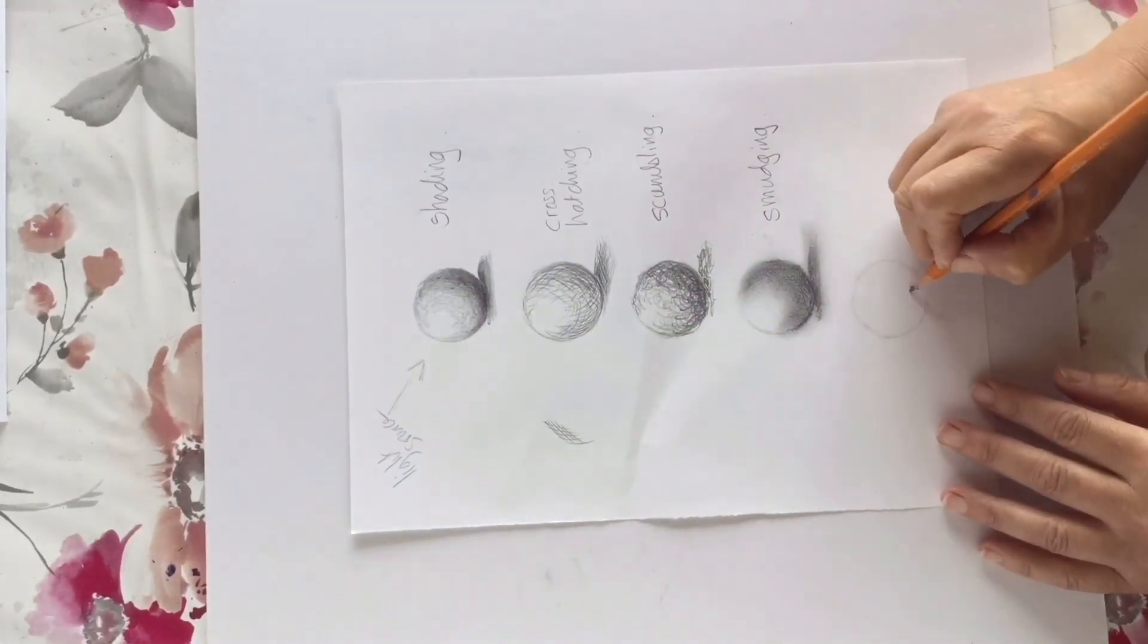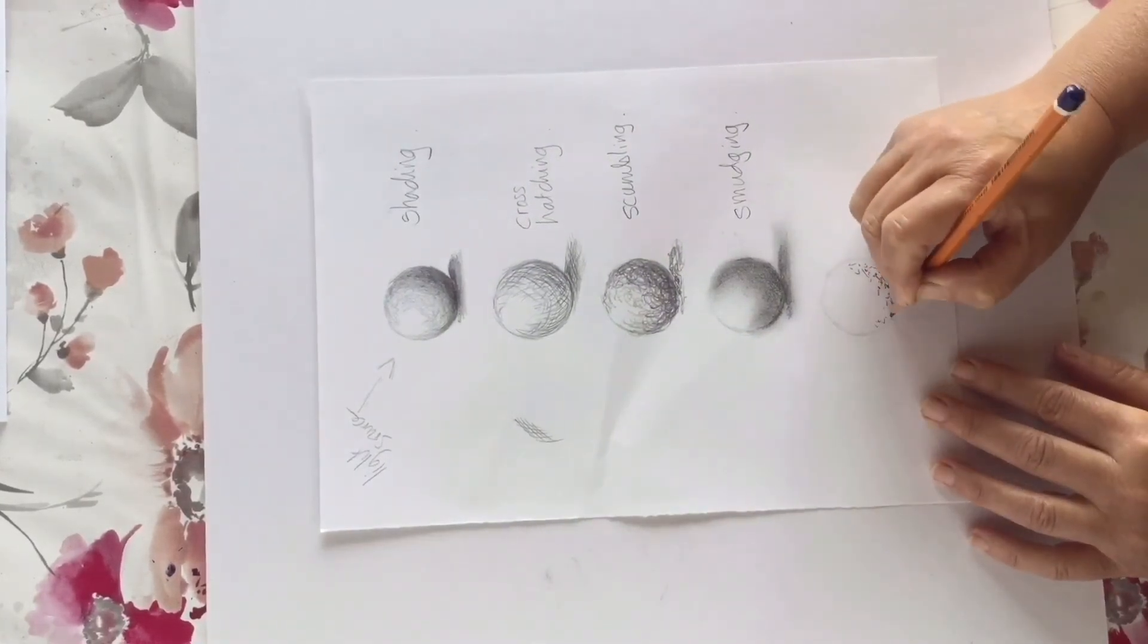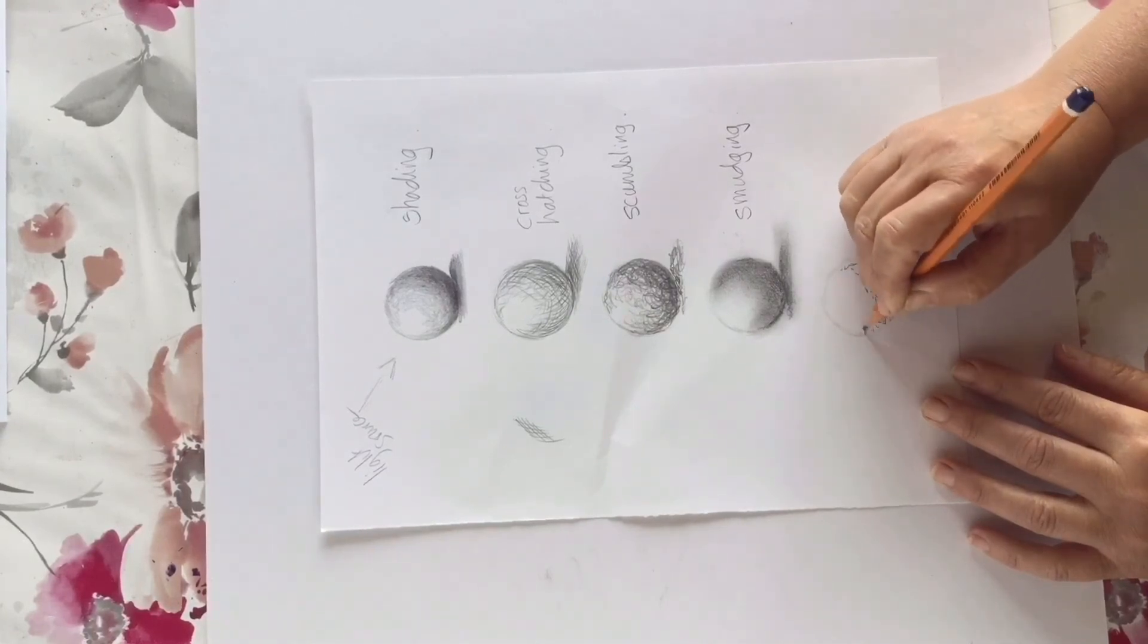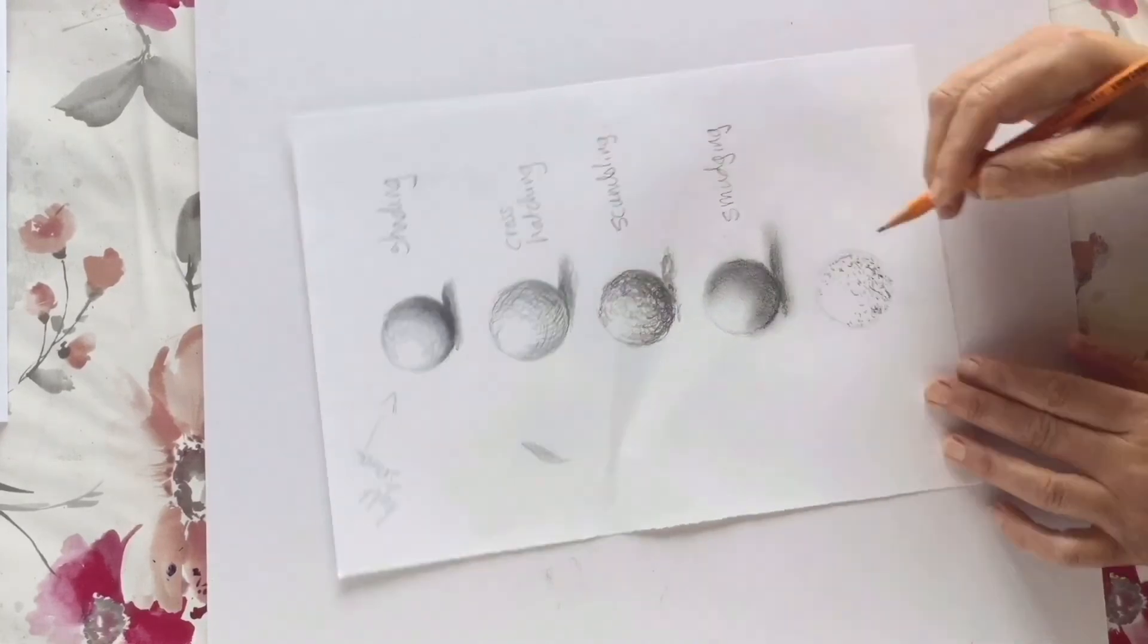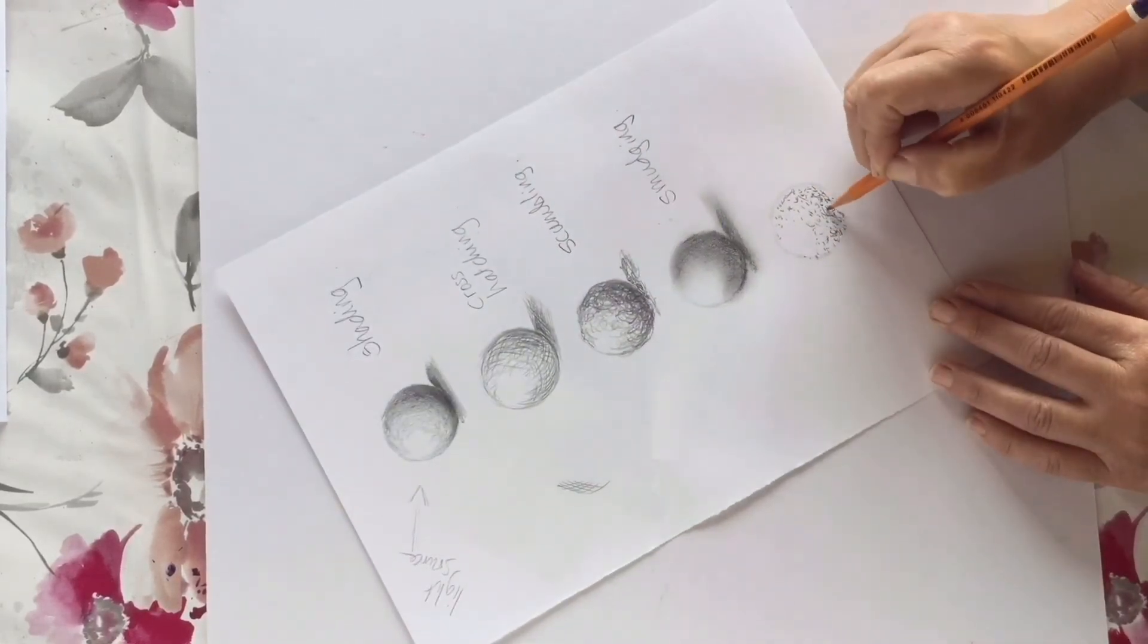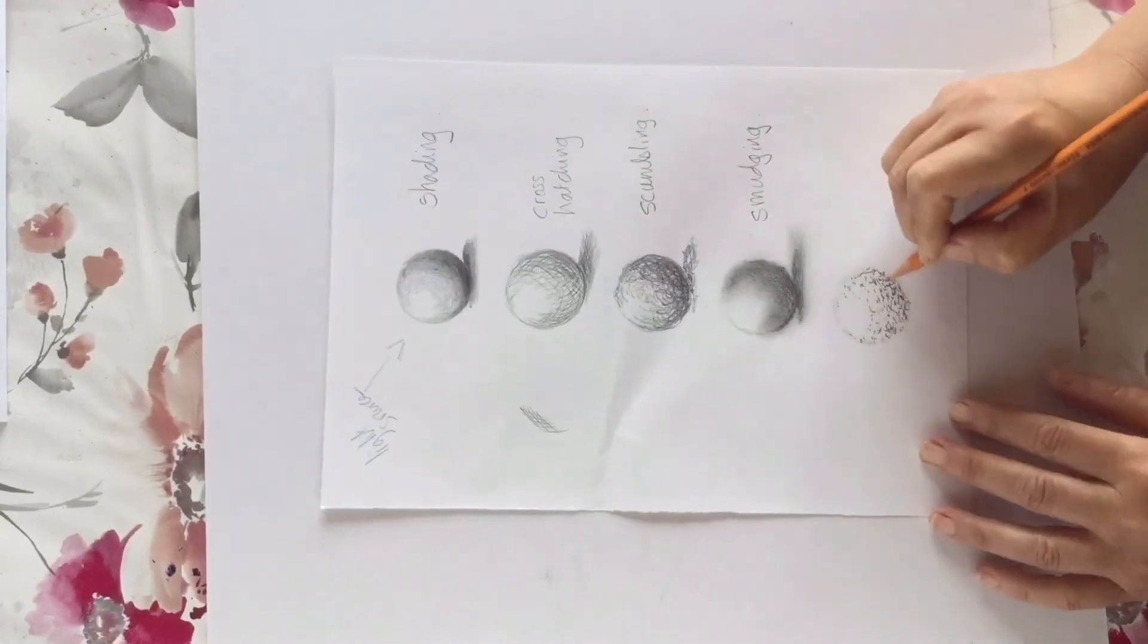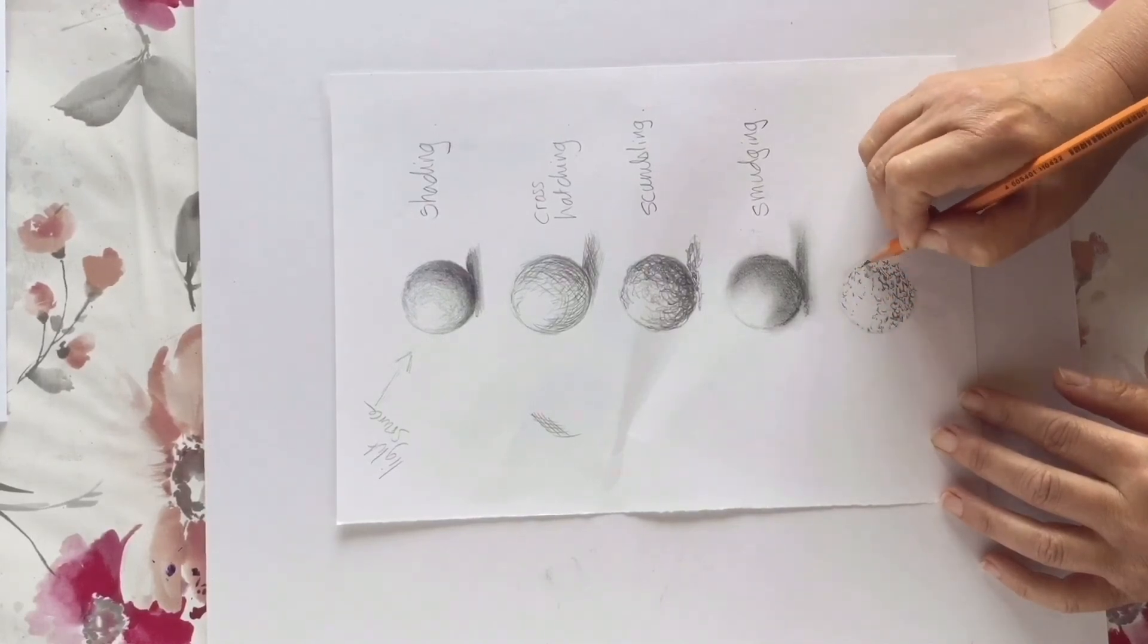The final technique we're going to look at today is stippling. This is where you build up an impression of tone by doing lots and lots and lots of dots. The darker you want the tone to be, the more densely you need to put the dots together. For a lighter area, just have a few dots scattered here and there. This is a fun technique, but it does take time and patience if you want to do a good job of it.